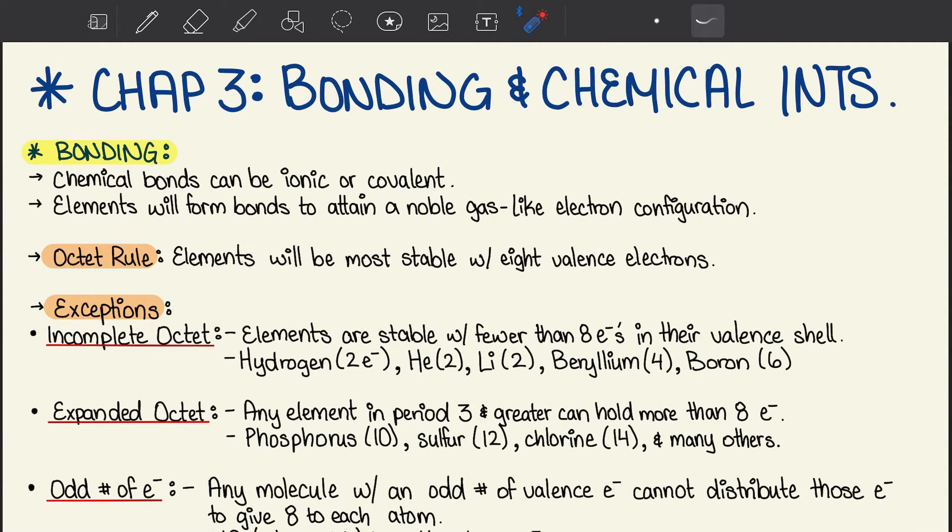Some elements have an incomplete octet, so they are stable with fewer than 8 electrons in their valence shell. This includes hydrogen, which has 2, helium, which has 2, lithium with 2, beryllium with 4, and boron with 6.